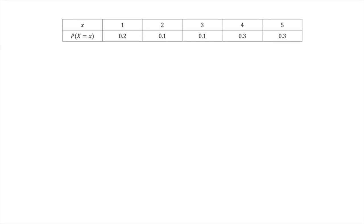I'll start by adding some columns to this table. Now we're looking for the cumulative probability — that's the probability that capital X be less than or equal to x, where the lowercase x corresponds to all the values at the top of the table. The first entry, the probability that X be less than or equal to 1, will simply be equal to the probability that X be equal to 1, so that would be 0.2.